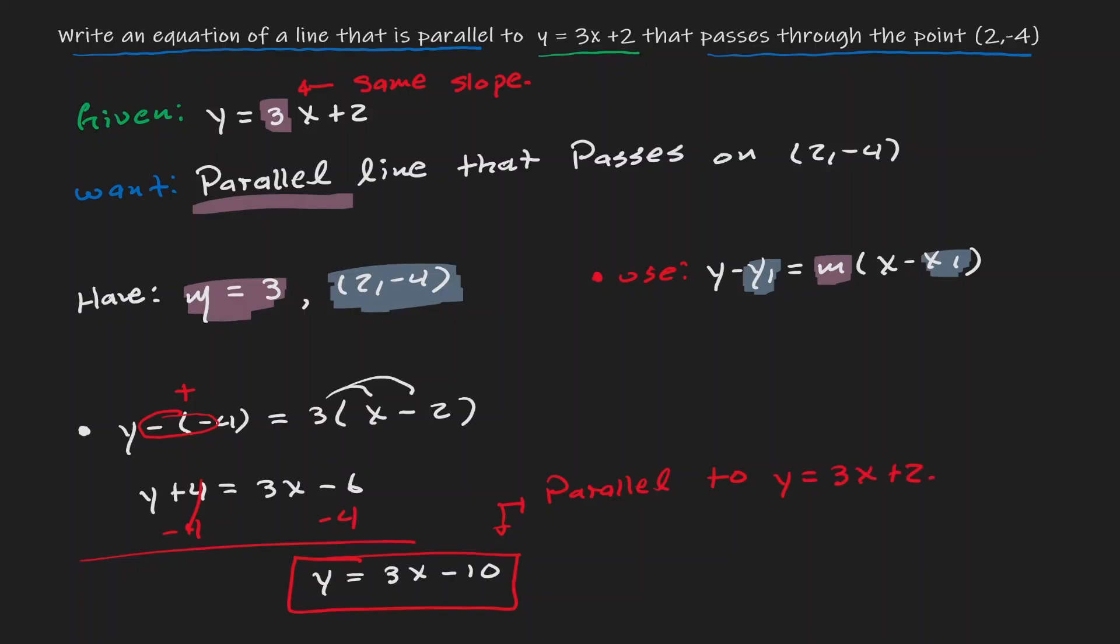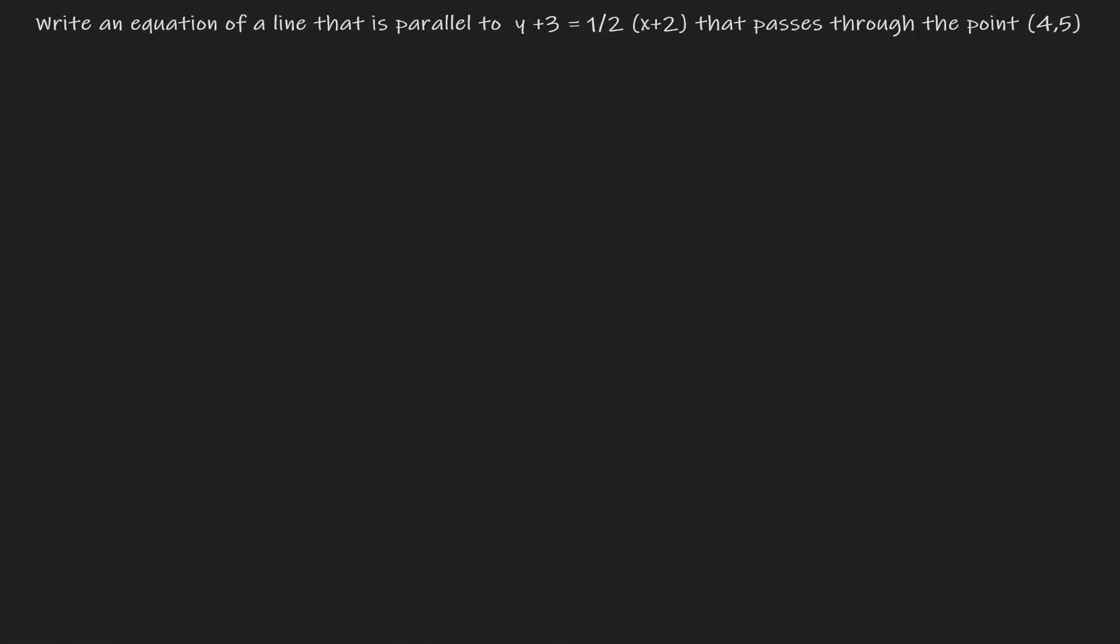Let's take a look at another example. So let's understand the situation here. We want to write an equation of a line that is parallel to the line y + 3 = 1/2(x + 2). And we want that line to pass through the point (4, 5). So let's organize that information.